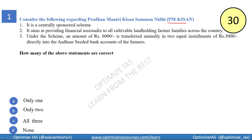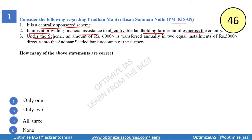Statement one: it is a centrally sponsored scheme. Statement two: it aims at providing financial assistance to all cultivable landholding farmer families across the country. Statement three: under the scheme, an amount of six thousand rupees is transferred annually in installments of rupees three thousand directly into Aadhaar-seeded bank accounts of the farmers.